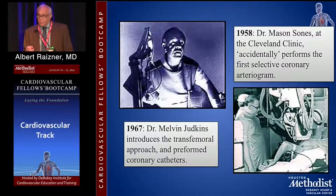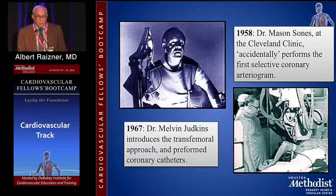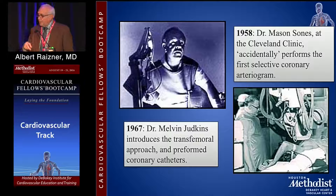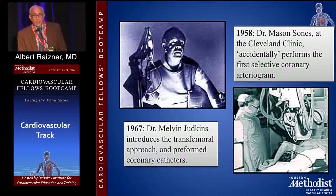In those days, aortic root injections looking for coronary artery disease was the only method. You put a catheter in and bring it down to the aortic root. In this particular case, the catheter had inadvertently slipped into the right coronary artery, and a power injection of 30 cc's of dye was made into the coronary artery, which gave a beautiful arteriogram. The patient had a temporary period of asystole and required some pumping on his chest.